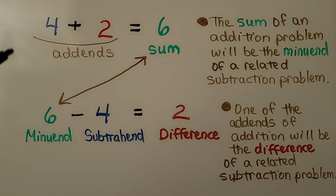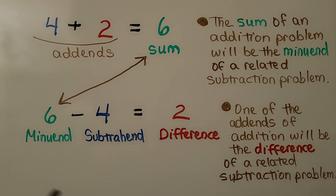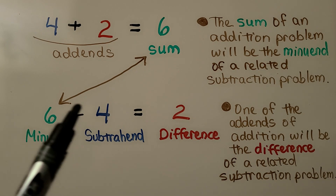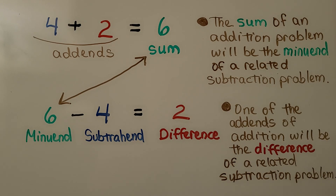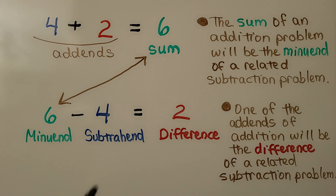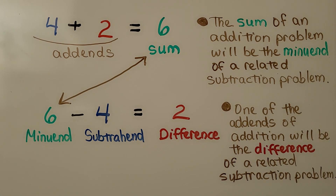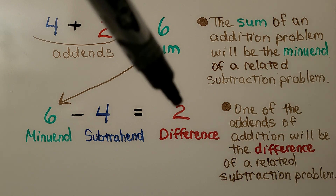Here we have two related facts: 4 plus 2 is equal to 6, and 6 minus 4 is equal to 2. We have our addends, we have our sum. This number is called the minuend, this number is called the subtrahend. We take the subtrahend from the minuend and find the difference. Can you see the same three numbers — a 4, a 2, and a 6 — in both facts?